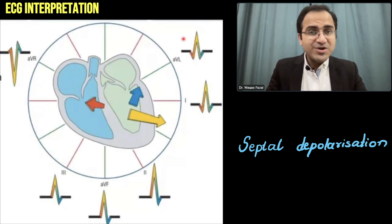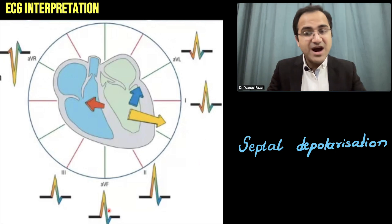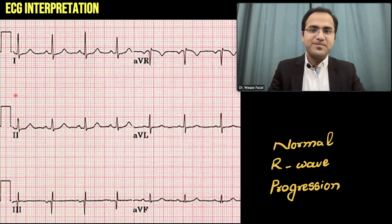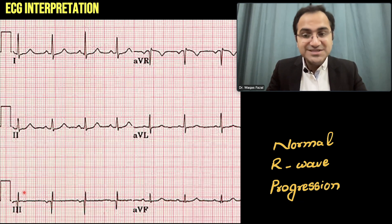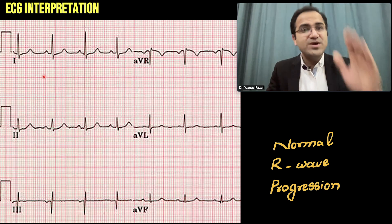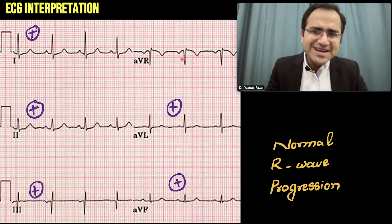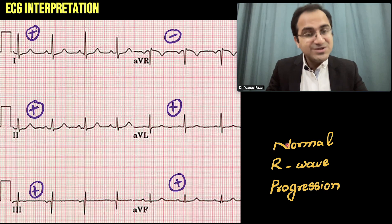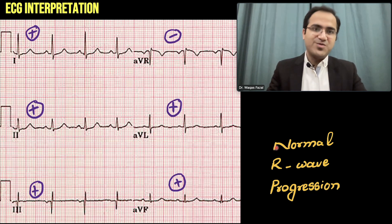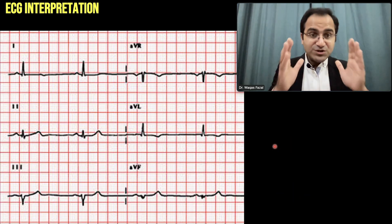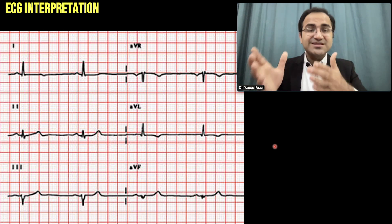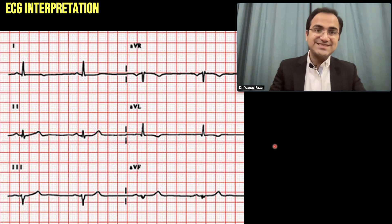In normal R wave progression, all leads show positive deflection of the R wave except AVR. Looking at this ECG, lead 1, 2, 3, and AVL are all showing positive upward deflection of the R wave, while AVR is showing negative deflection — which is normal. This is a normal R wave progression. Pause the video and check the R wave progression in the hexaxial lead.